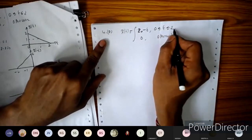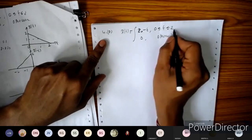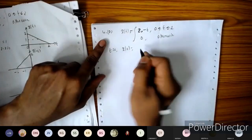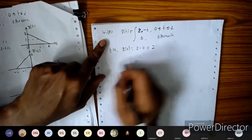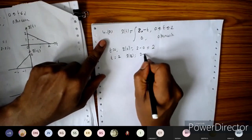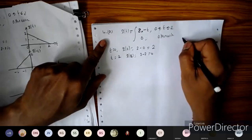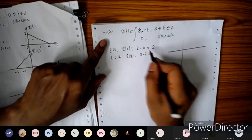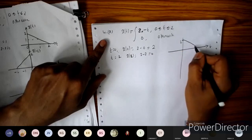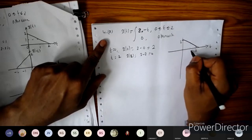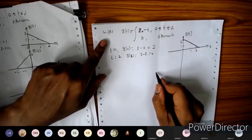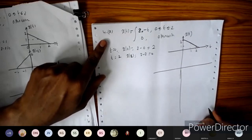Since x(t) = 2 - t from 0 to 2, let us substitute the limits. When t = 0, x(0) = 2 - 0 = 2. When t = 2, x(2) = 2 - 2 = 0. So the waveform starts at amplitude 2 at t = 0 and decreases to 0 at t = 2. This is the waveform x(t).